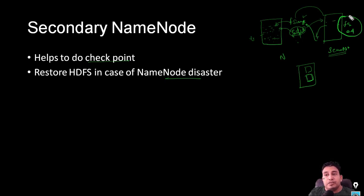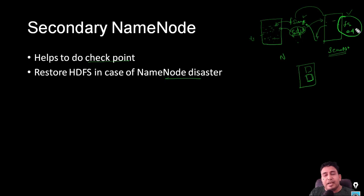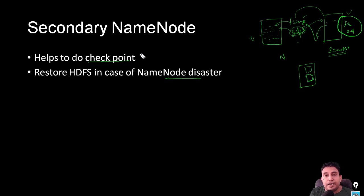We can restore using secondary name node, but it takes a lot of time. So it is not a high availability option — it's just a backup option. It helps to do the checkpoint. That is the role of secondary name node.